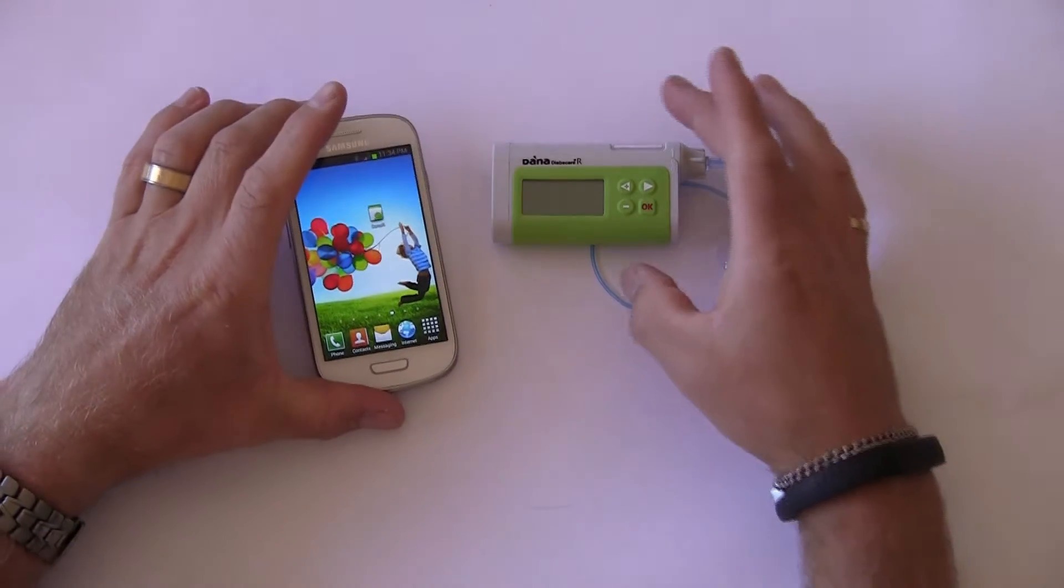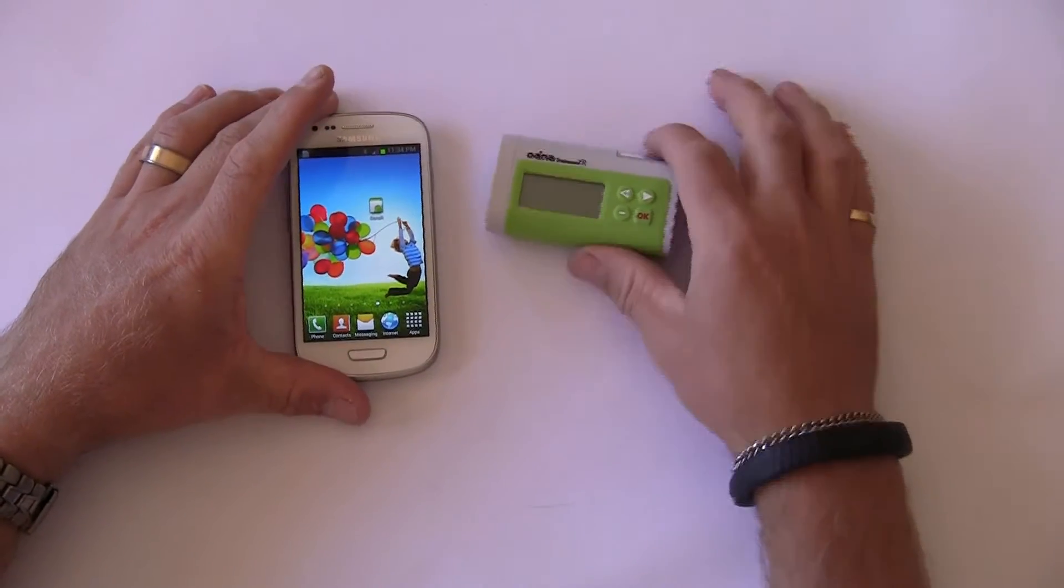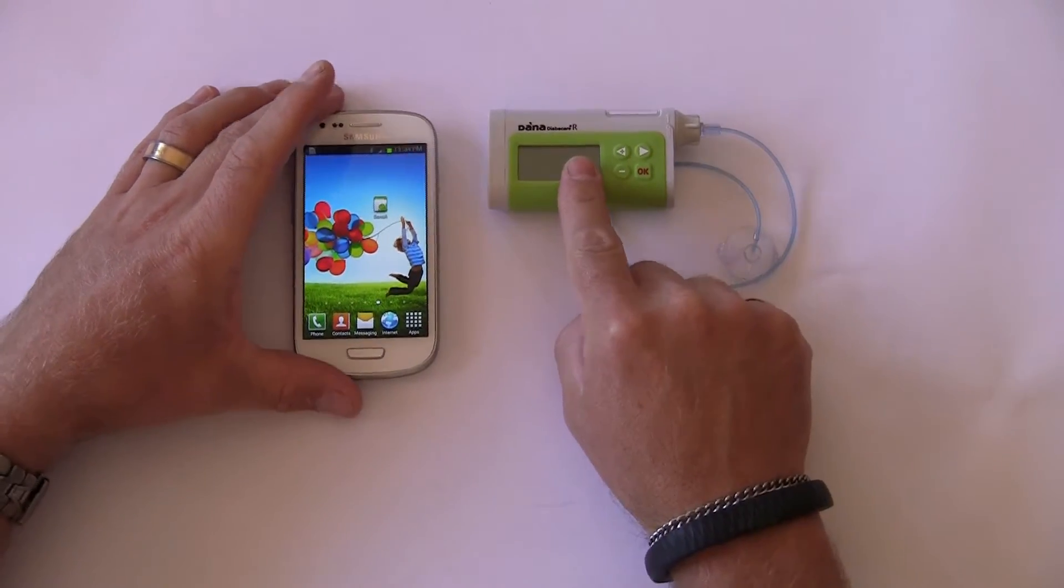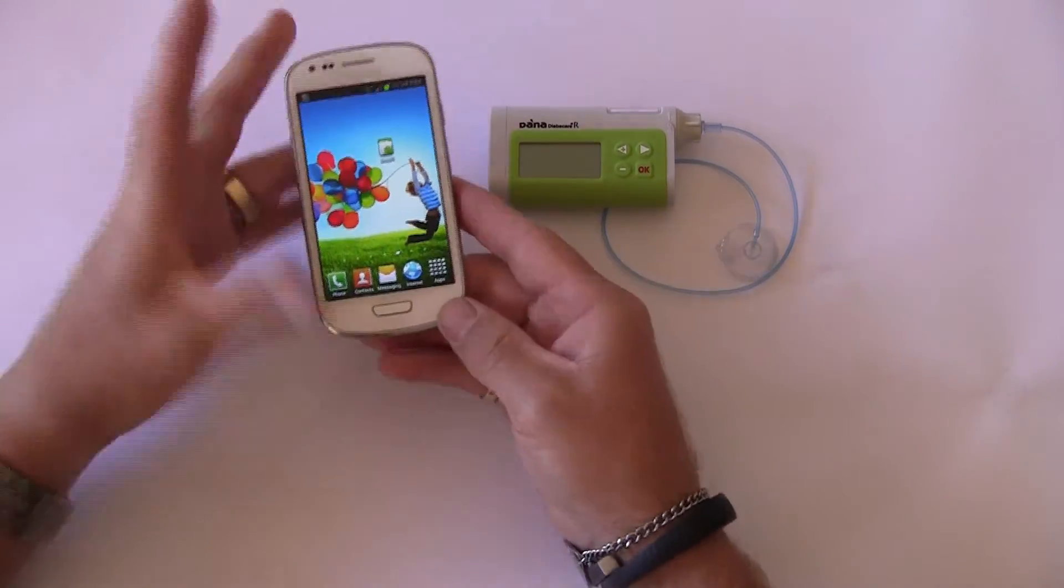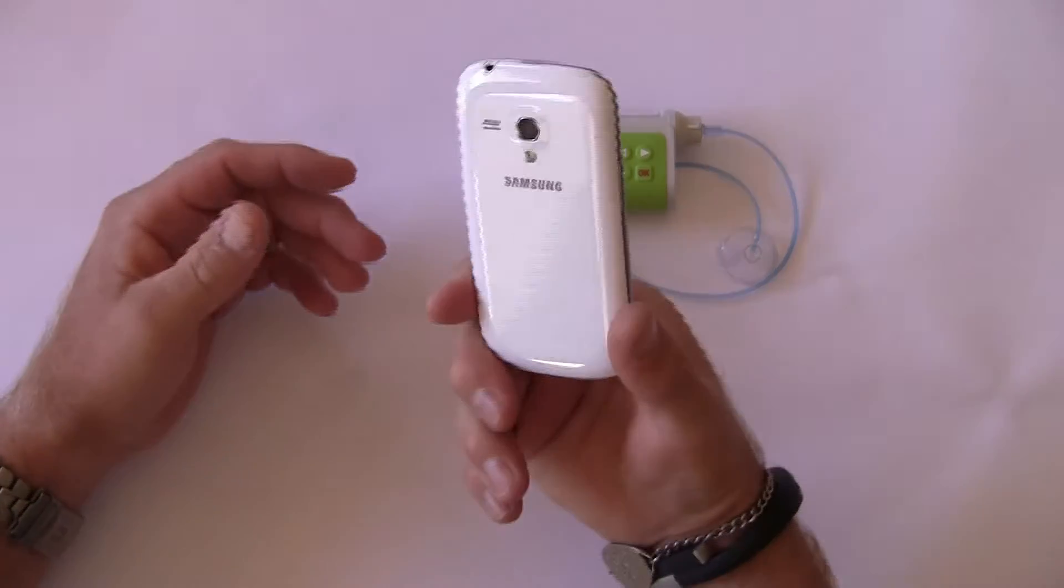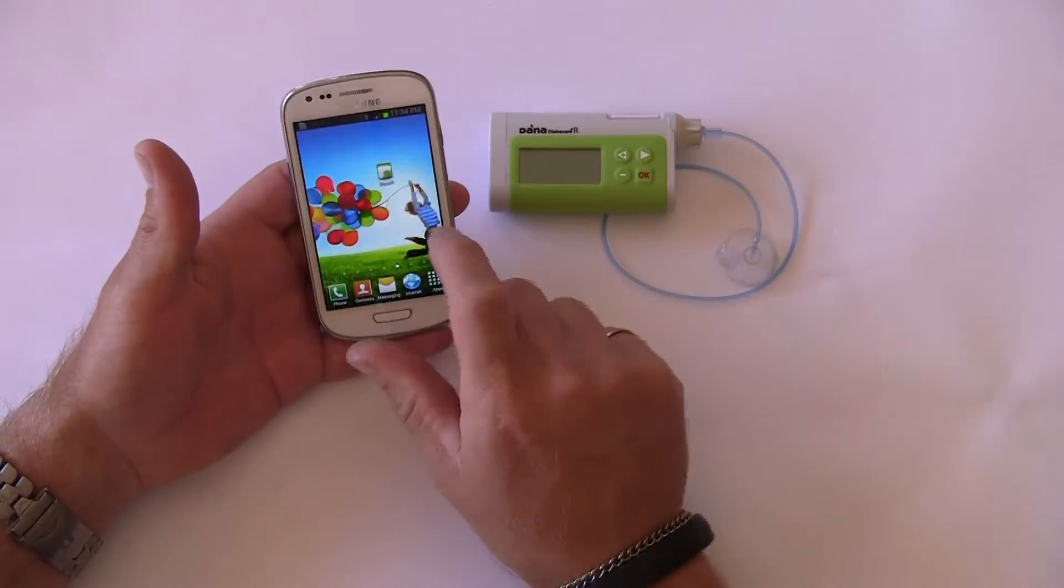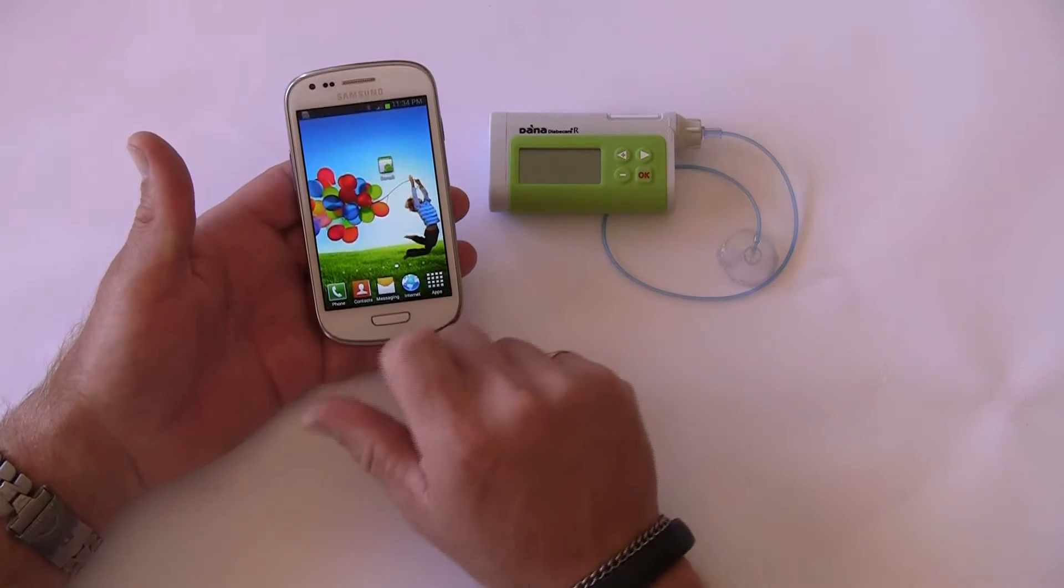Okay, in this video here we're going to demonstrate the pairing process between a Dana R insulin pump and an Android cell phone. This is a Samsung S3 mini, and it has the Dana Android software already pre-installed on it.